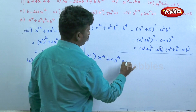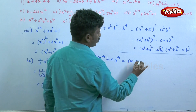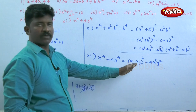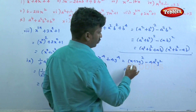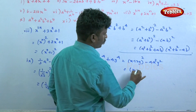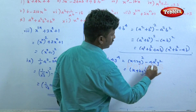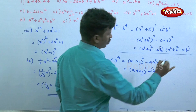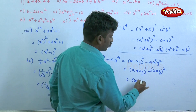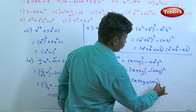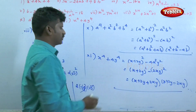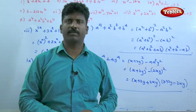The 11th question: x to the power 4 plus 4y to the power 4, which equals x squared plus 2y squared whole square minus 4x squared y squared. This can be written as x squared plus 2y squared whole square minus 2xy whole square, the format of a squared minus b squared. So the factors are x squared plus 2y plus 2xy into x squared plus 2y minus 2xy.